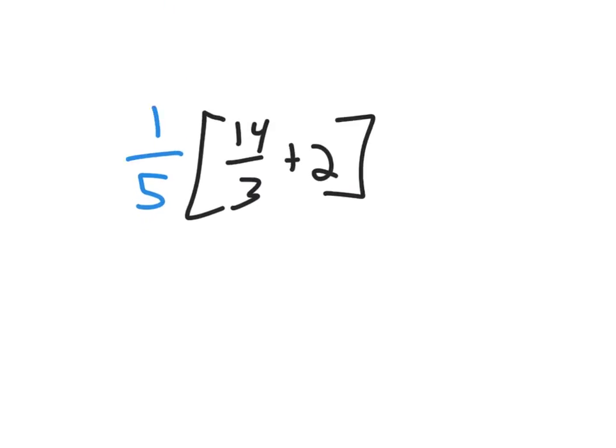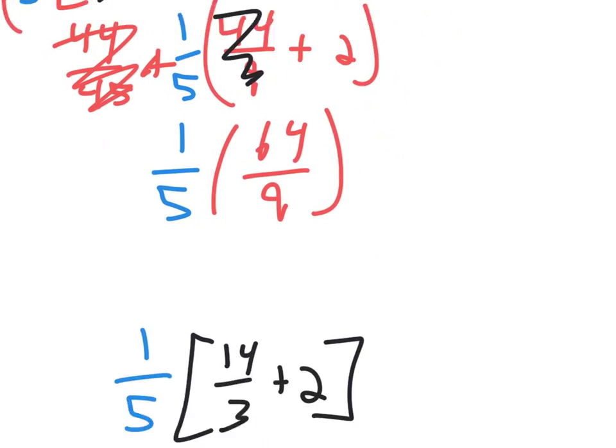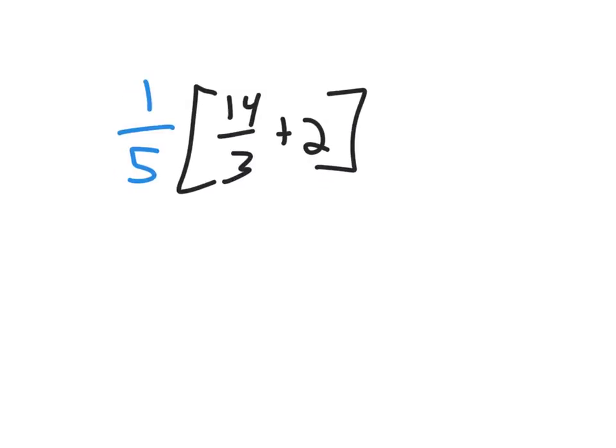So with that correction on the fraction arithmetic, when you boil those down, that left side should have been 14 over 3, not 44 over 45, or 44 over 9 was what I had. But with that correction, it should be 14 over 3.